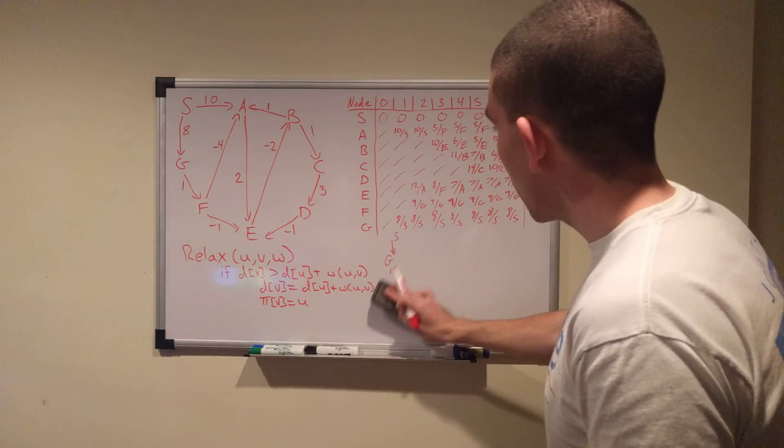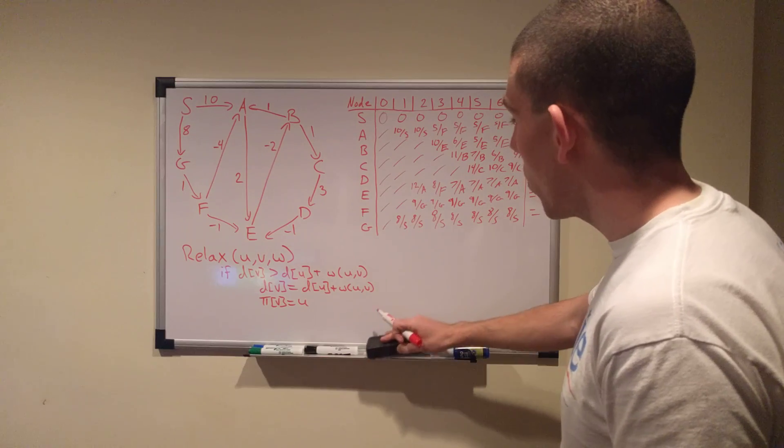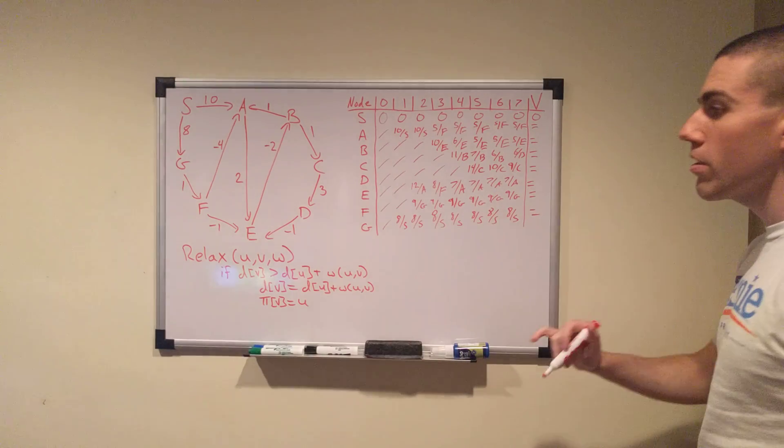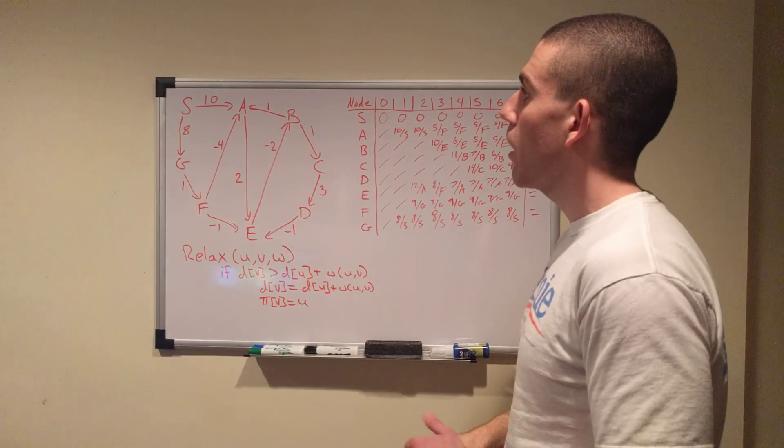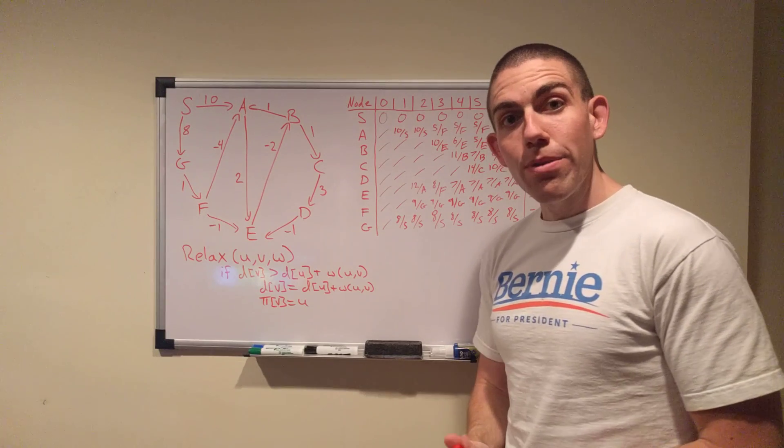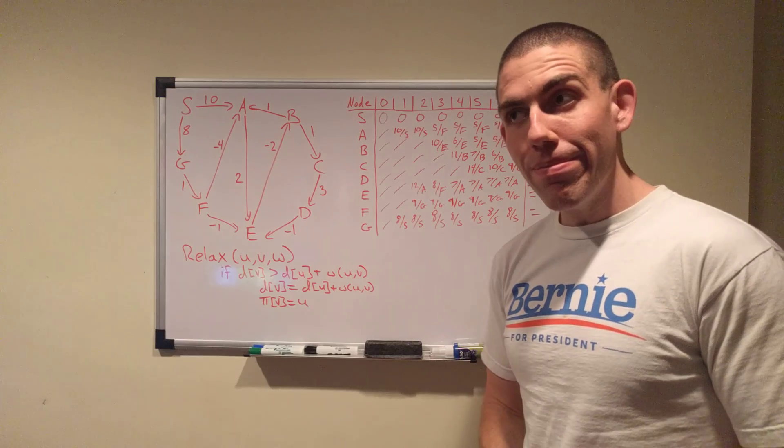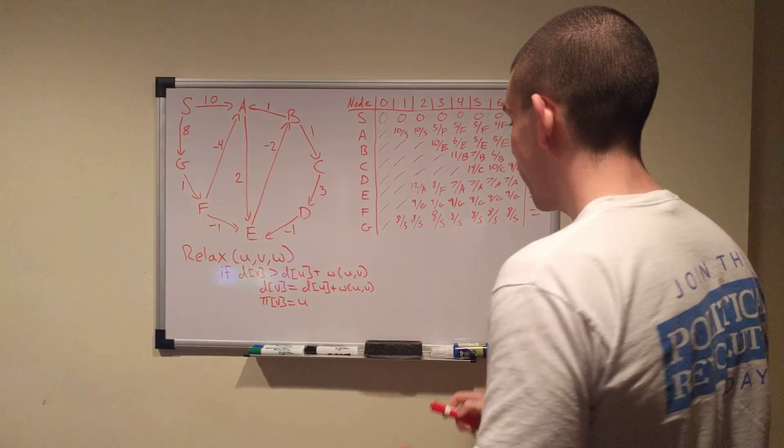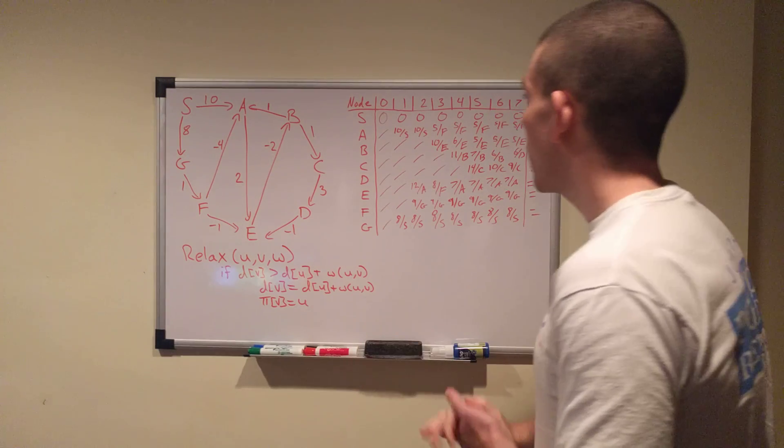So, that's how the previous array works. That's how the iterations work. That's how the V iteration works. That's how relax works. And that is how Bellman-Ford works on a directed graph with weighted edges, including negative edge weights. Hopefully, that helped.